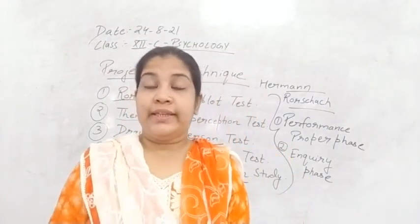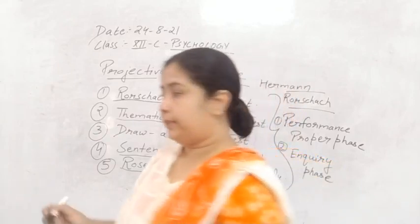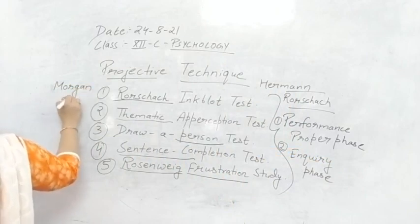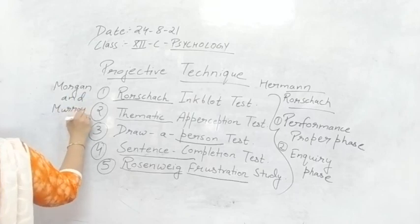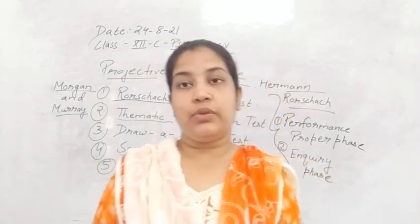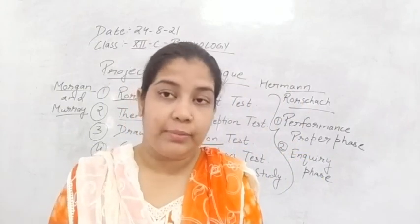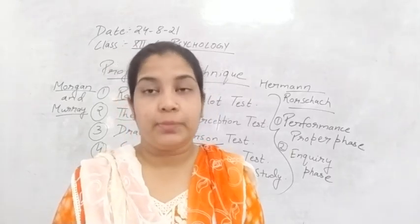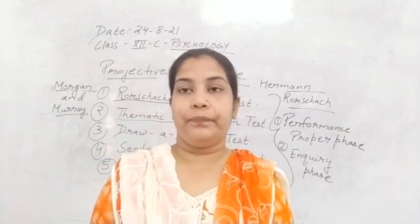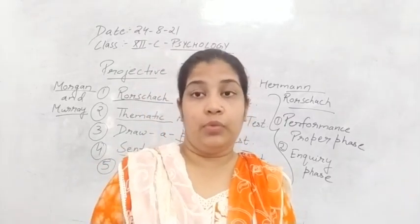The second projective technique is the Thematic Apperception Test, given by Morgan and Murray. In this technique, the subject is asked to write down a story. This is another very famous projective technique in the field of psychology to measure someone's personality. Again, the stimuli are unstructured — Morgan and Murray also use cards, and there are more cards than in Rorschach: a total of 31 cards.